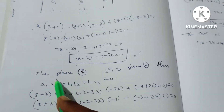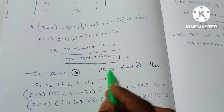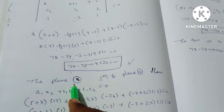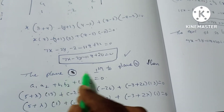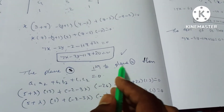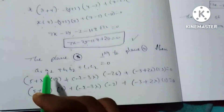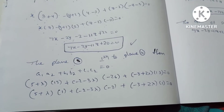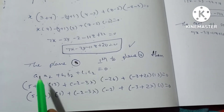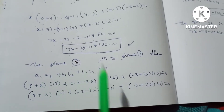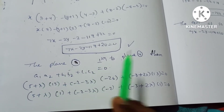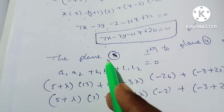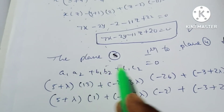Plane 3 is perpendicular to Plane 4. The condition for two planes to be perpendicular is a1·a2 + b1·b2 + c1·c2 = 0.